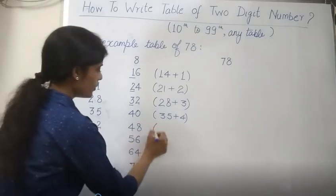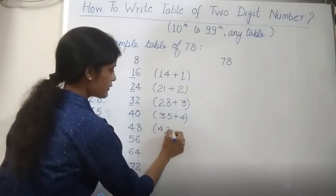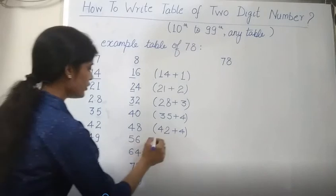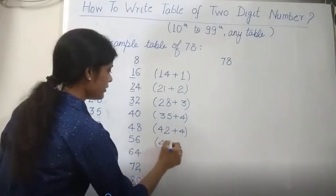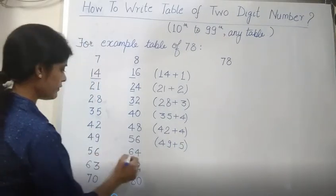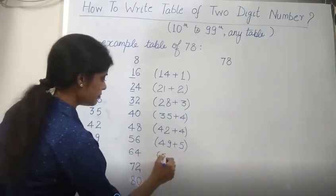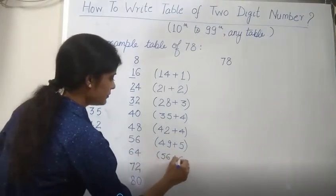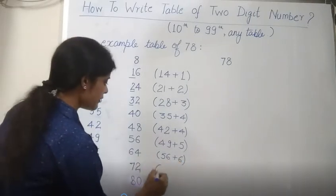Similarly, we get 42 plus 4. After that, 49 plus 5. Then 56 plus 6.